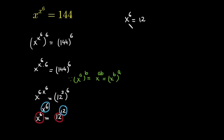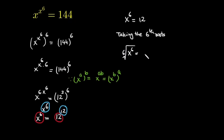Now we solve for x by taking the 6th root on both sides. So x raised to the power 6 equals 12, and taking the 6th root, the power 6 and the 6th root eliminate each other. Therefore x is equal to plus or minus the 6th root of 12. This is the final answer.